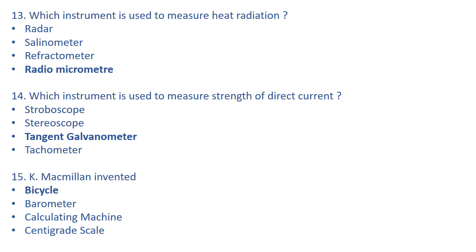Refractive index describes how light propagates through a medium. For example, the refractive index of water is 1.333, meaning light travels 1.333 times faster in vacuum than in water. Let's come to the next one: which instrument is used to measure the strength of direct current?